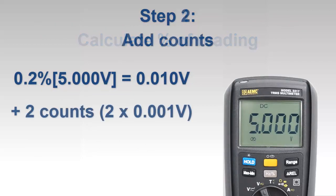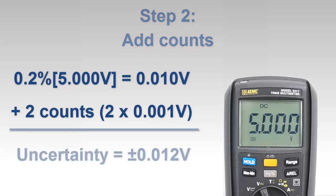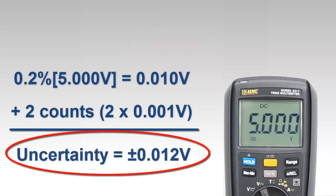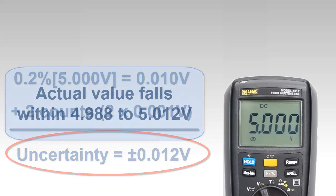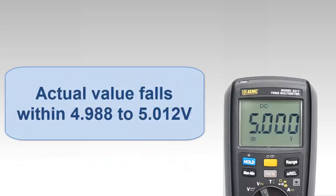We then add two counts. Taking the least significant digit of our reading, we define each count as one-thousandth of a volt. Thus the sum of the two counts equals 0.002 volts. Adding the percentage and counts together, we calculate an uncertainty of plus or minus 0.012 volts, or twelve thousandths of a volt. Thus in the example shown on the screen, the actual value falls within the range of 4.988 to 5.012 volts.